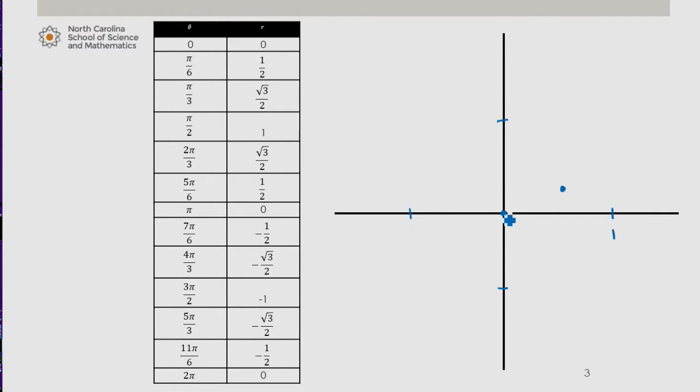At pi over 3, I have a radius of root 3 over 2. At pi over 2, I have a radius of 1. And so on.